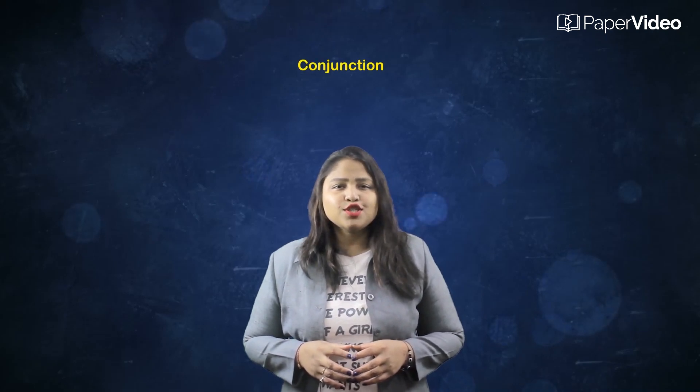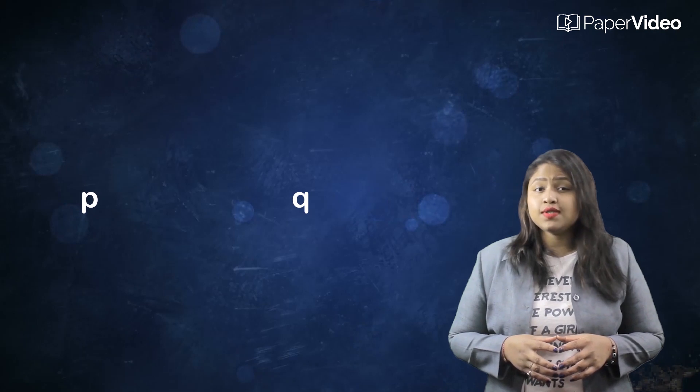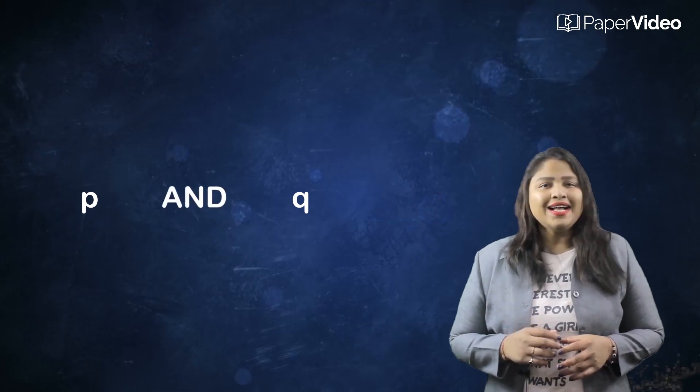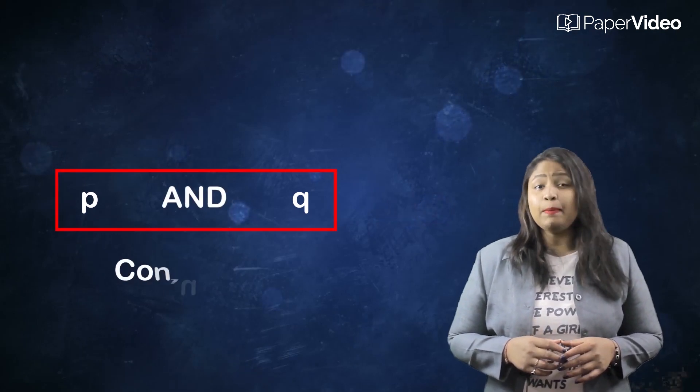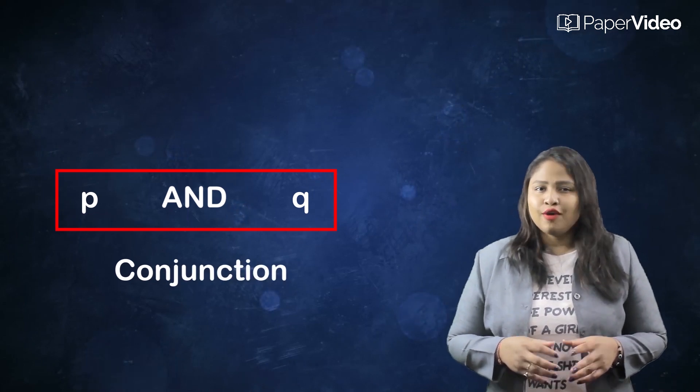Two or more statements are usually connected using logical connectives, one of which is known as conjunction. If P and Q are any two statements connected by the word AND, then the resulting compound statement P and Q is called the conjunction of P and Q.